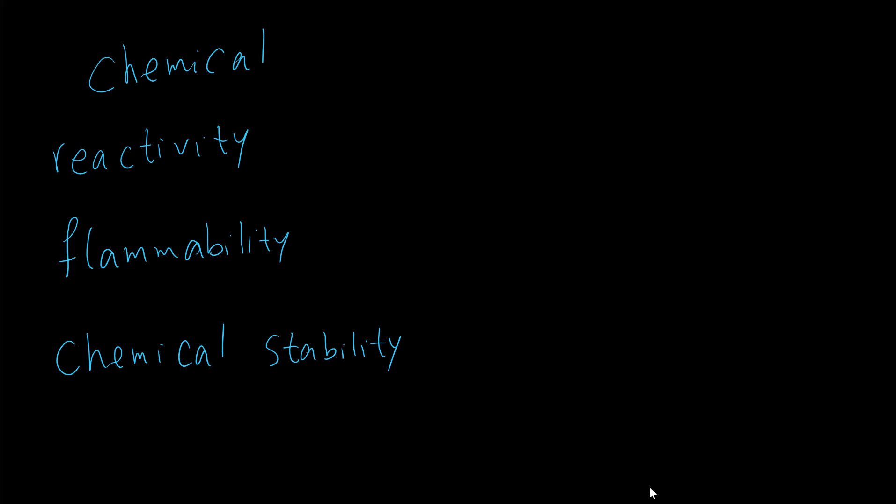For reactivity, we can say iron rusting with oxygen and producing iron oxide. So rusting is a chemical change. Or we can say iron reacts with oxygen. So this is a chemical property.